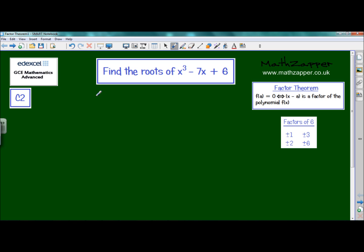So first of all, I'm going to write that down as a function: f(x) = x³ - 7x + 6.